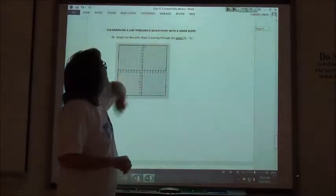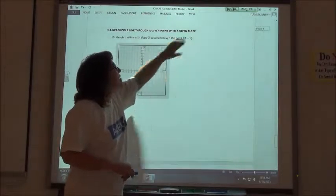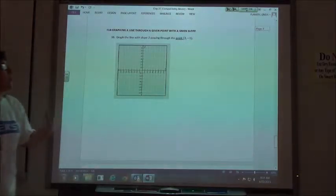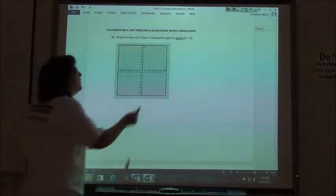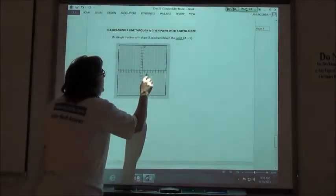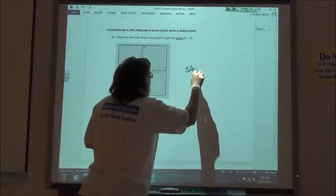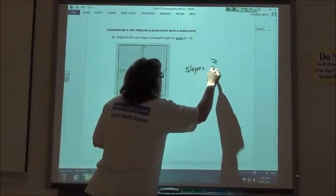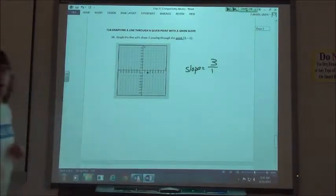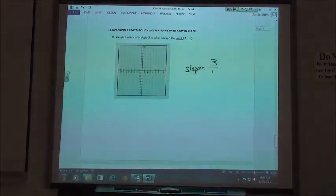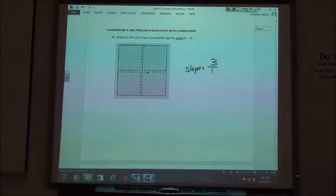So we want to graph the line that has a slope of 3, passes through the point 2, negative 1. Have to plot the point 2, negative 1 first. So 2, negative 1 would be down here. My slope is 3, which we'll write as 3 over 1. And so that means from that point we go up 3 and over 1.